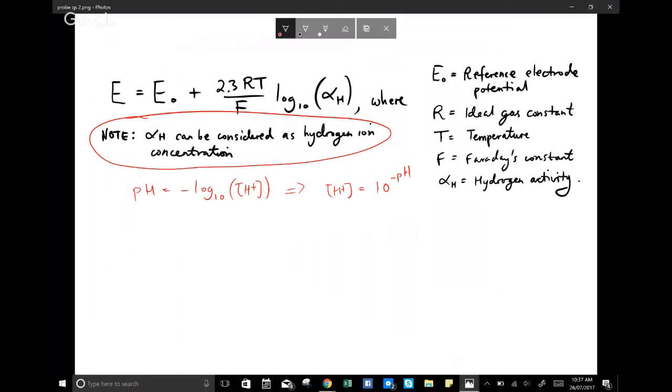From our note, we know that alpha H is essentially this, the concentration of the H plus ions. We know that alpha H is actually equal to 10 to the negative pH. At least we can consider it in this case.